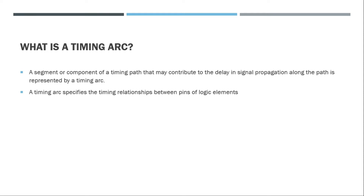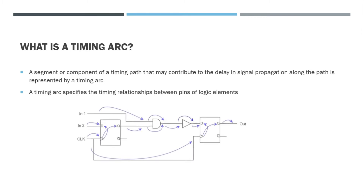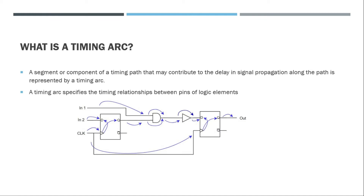For example, it may represent the relationship between the inputs themselves. Take an XOR gate — the output depends on both inputs. Or consider a D flip-flop, where the relationship between the clock and the D input is very important. In this figure, I've shown all the different types of timing arcs in a register-to-register path. The arrow from input 1 to the input pin of the AND gate is one timing arc, and from the AND gate input to its output is another.